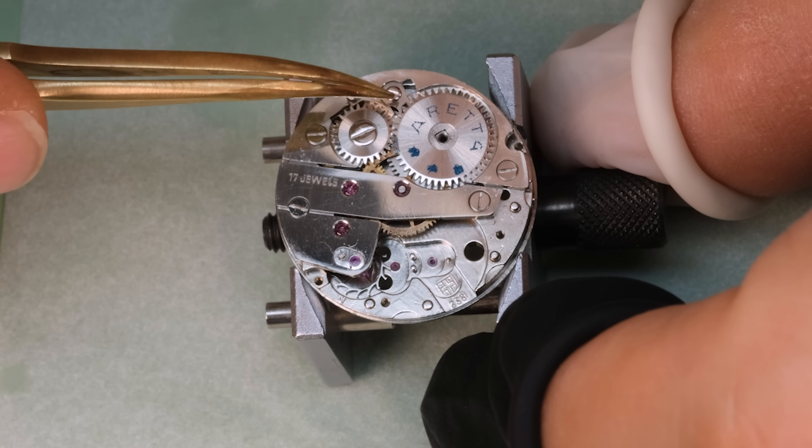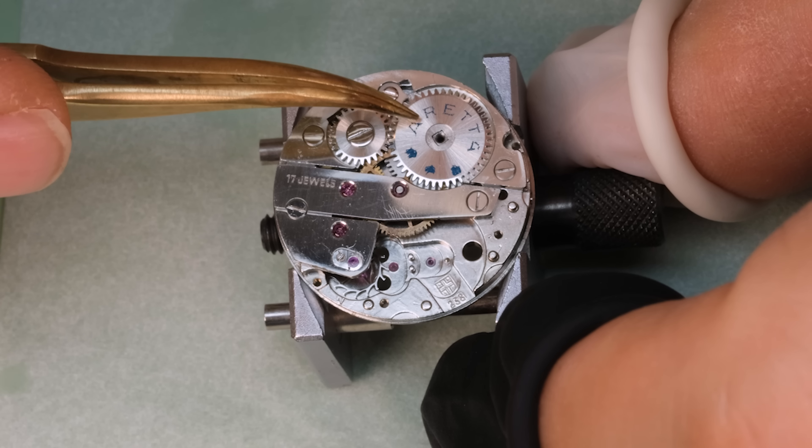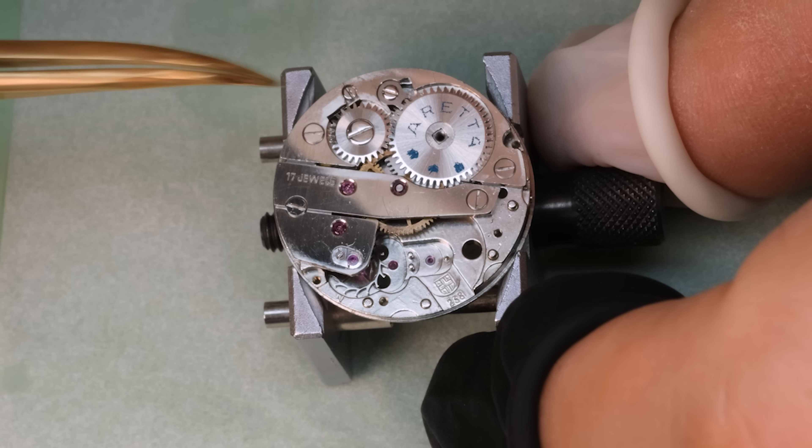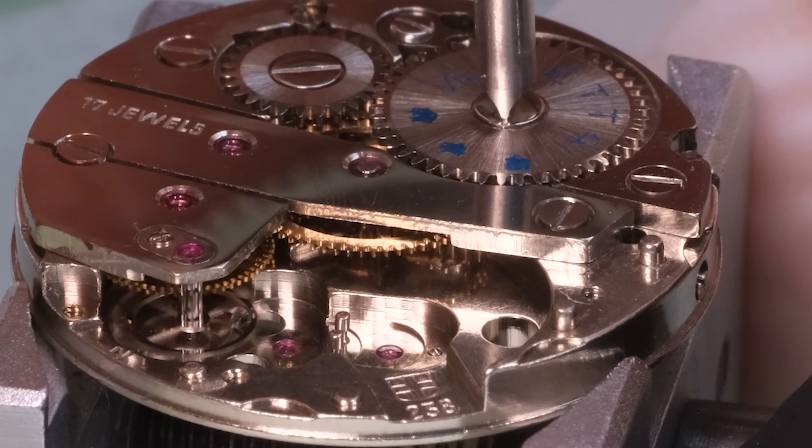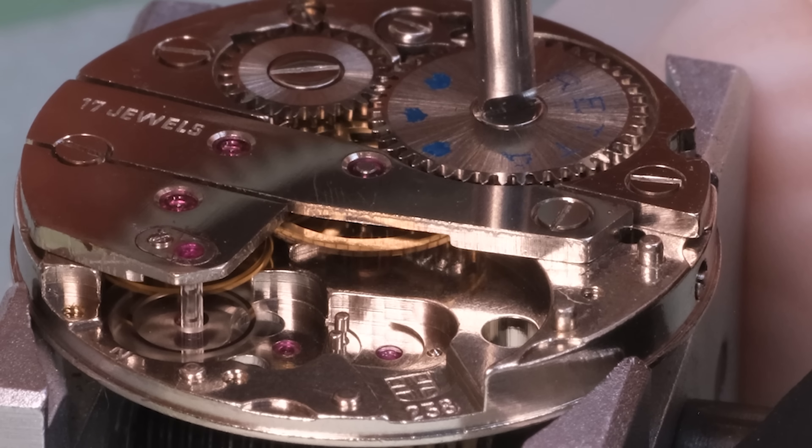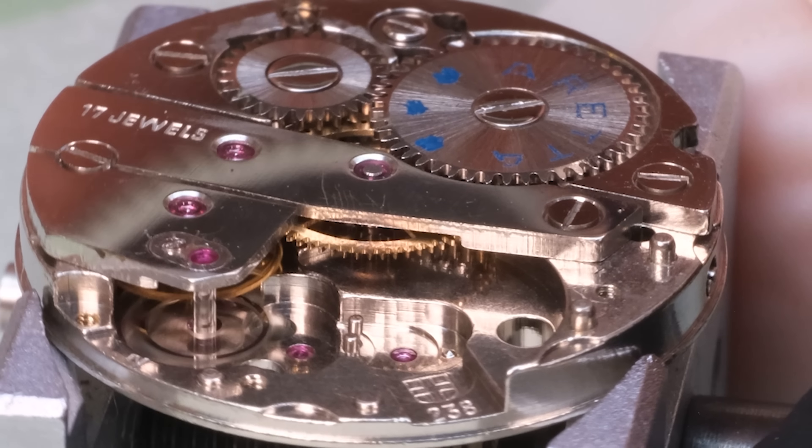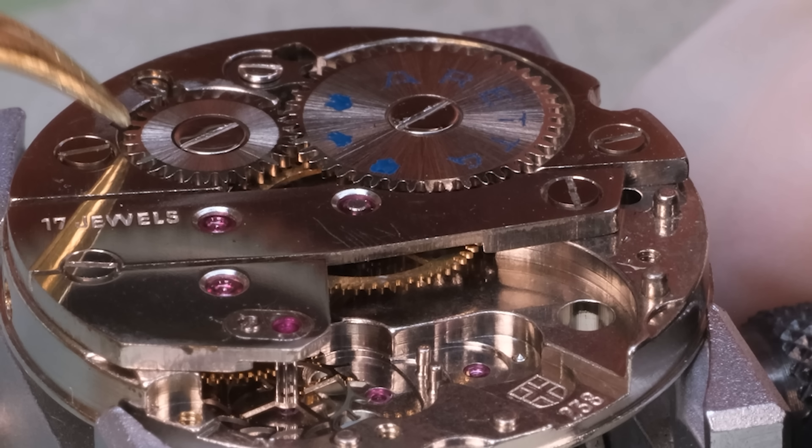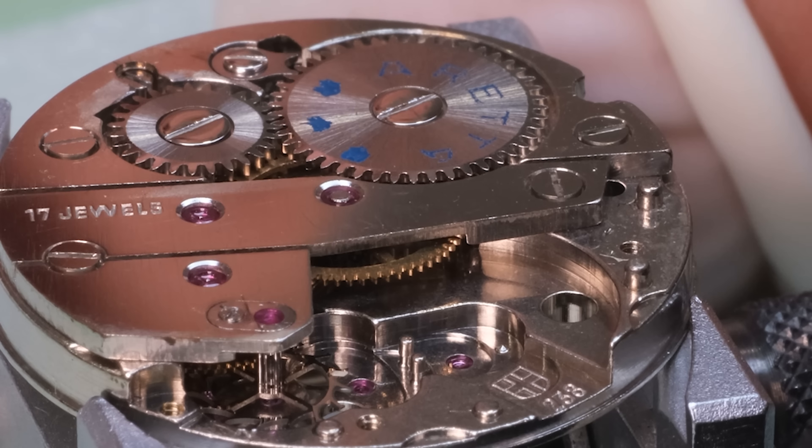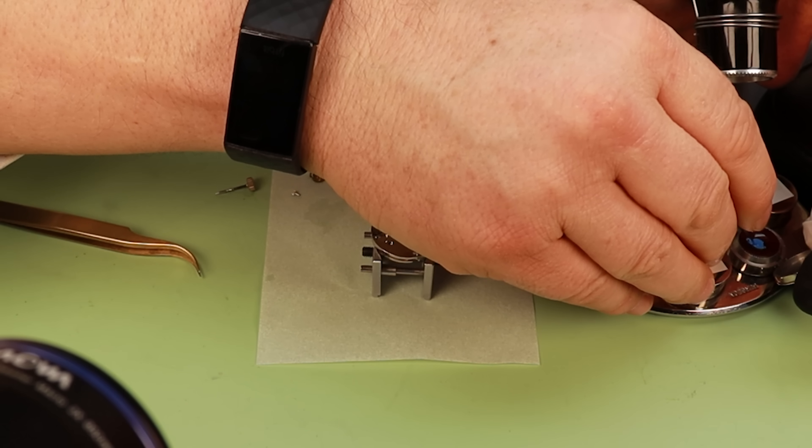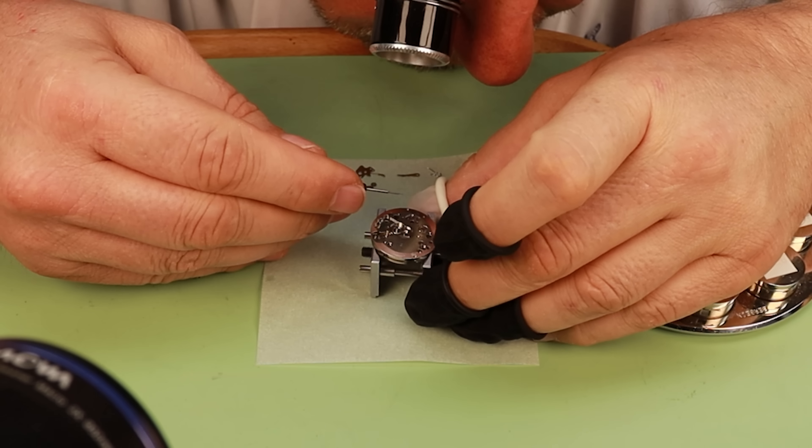So we see that the train of wheels is in place. Now we're putting on the ratchet wheel and the crown wheel. This will help us wind the watch. So we see that when we turn that ratchet wheel, the whole barrel turns and with it the train. Same thing when we turn the crown wheel. The crown wheel is the one that will directly mesh with the winding stem.